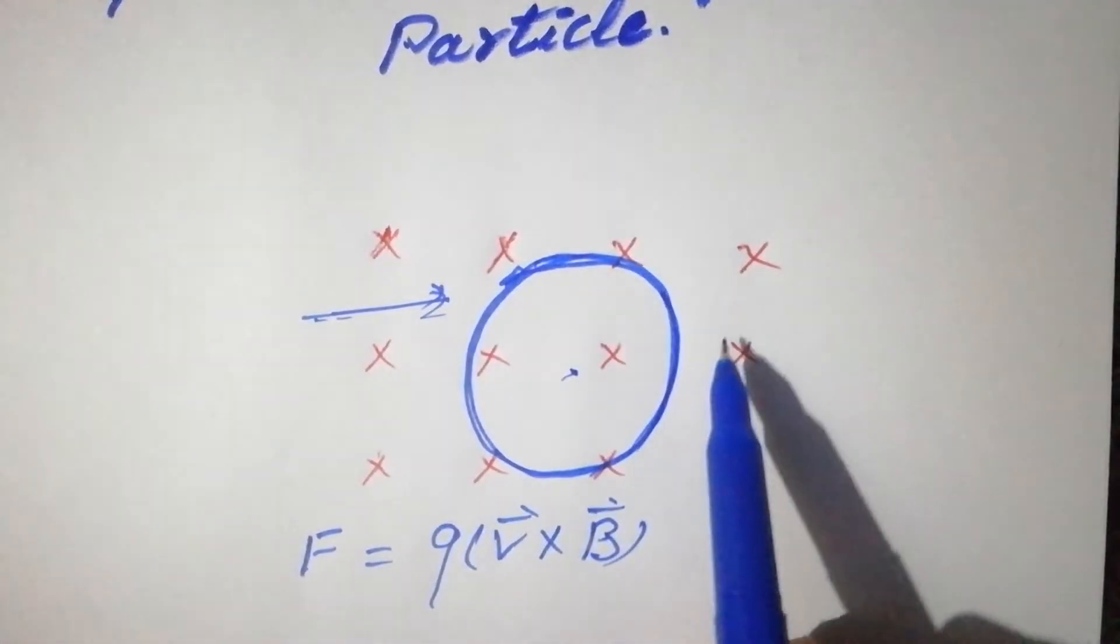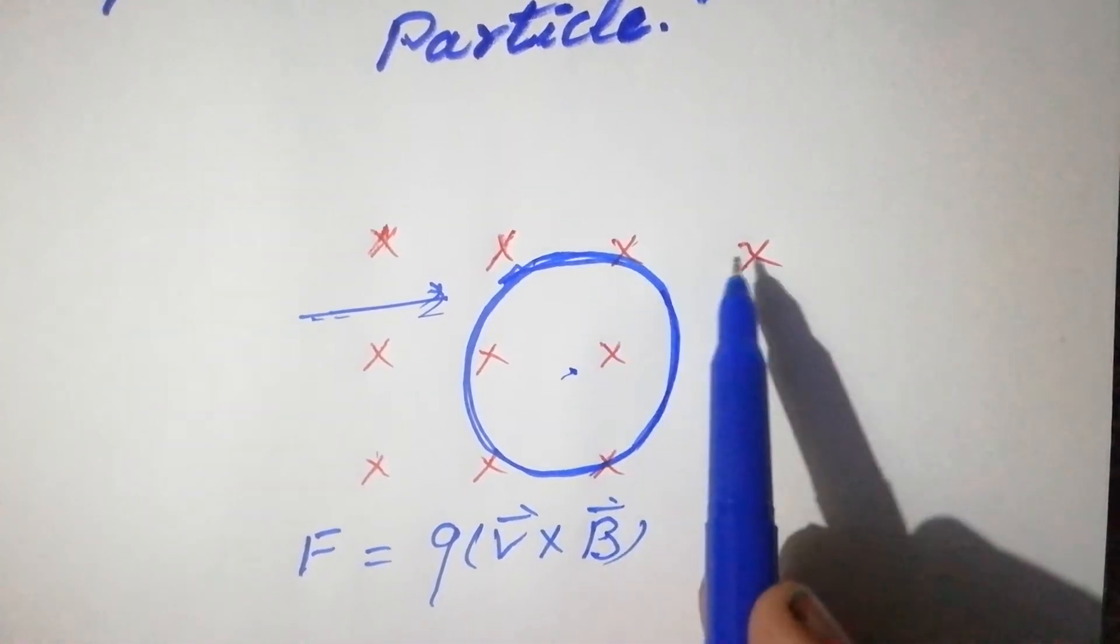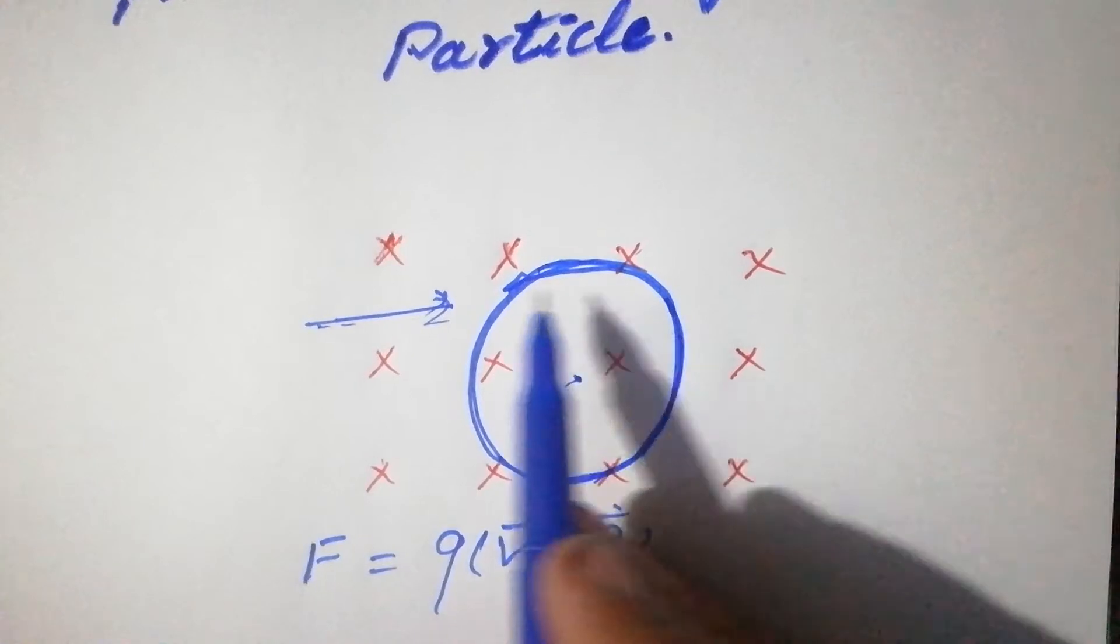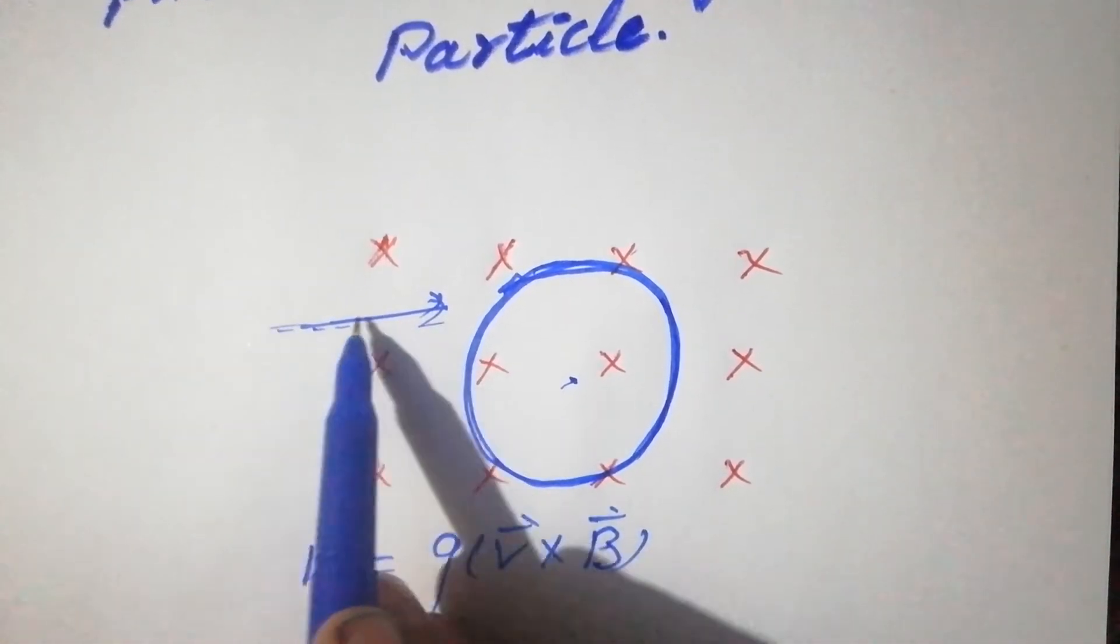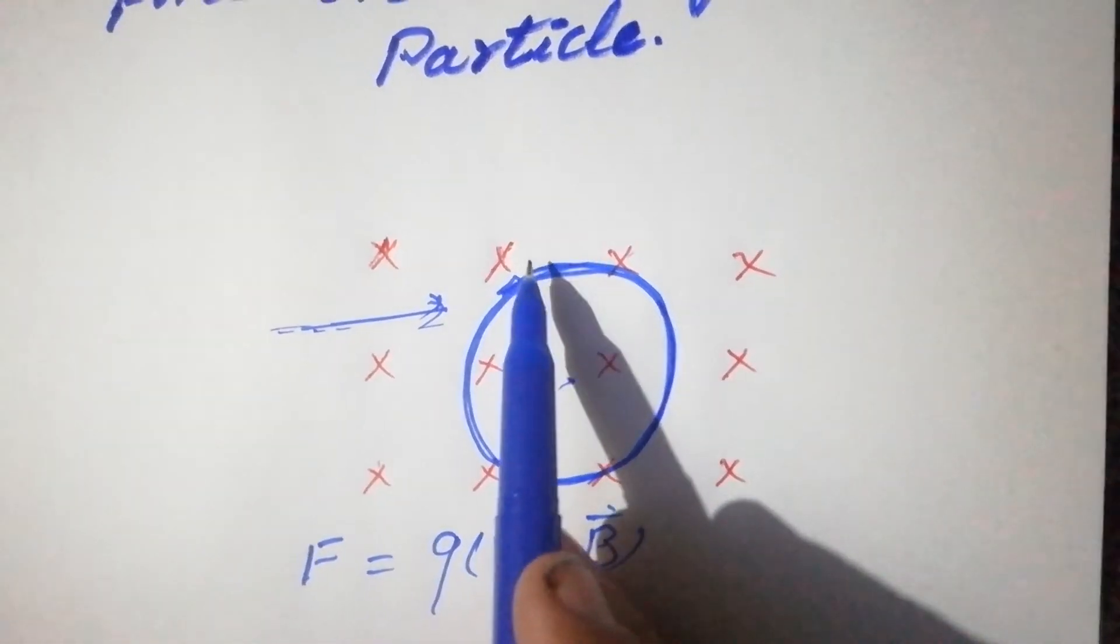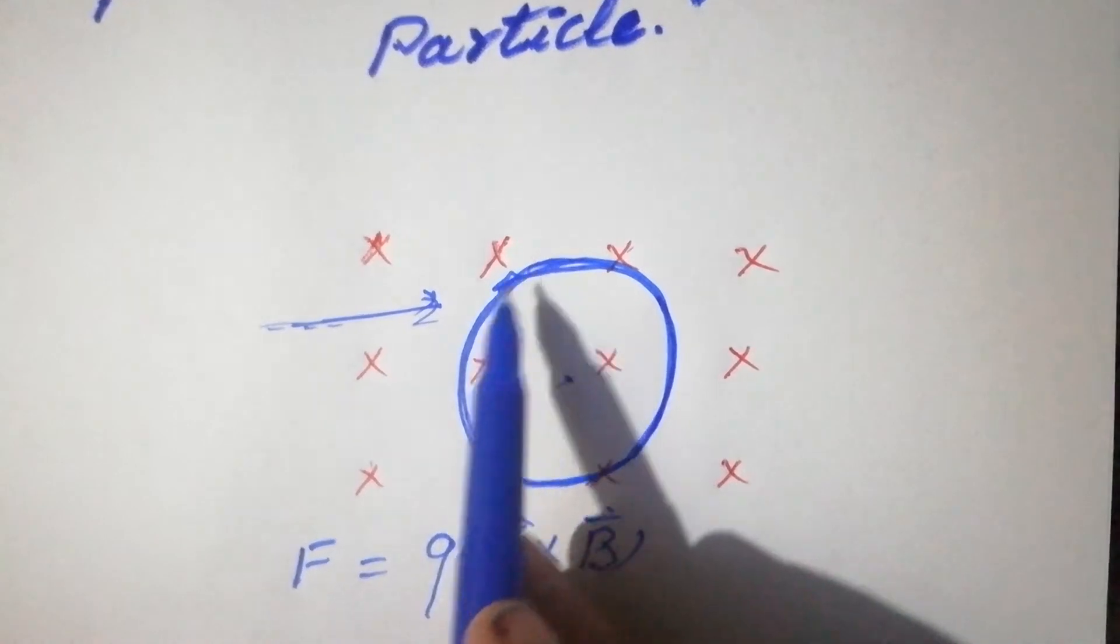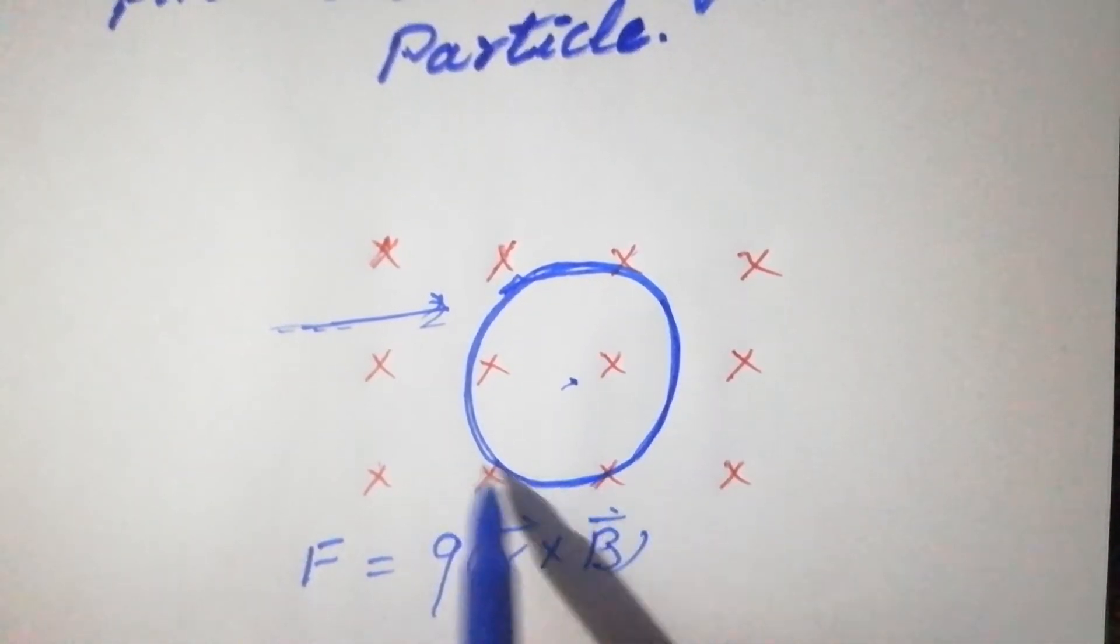This magnetic field is indicated by a cross, showing that the field is into the page. Let's suppose the charged particle enters that region. Magnetic force is a deflecting force - it will deflect the charged particle to move in a circle.